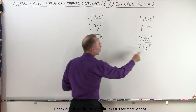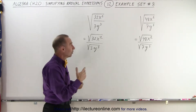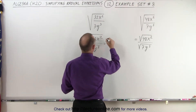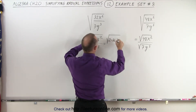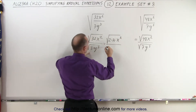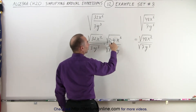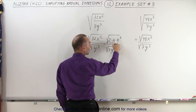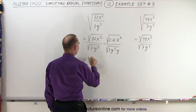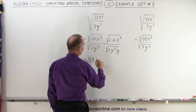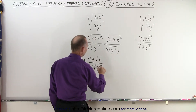Likewise, here we have y cubed in both. So what we can do is get rid of at least a y squared. This can be written as the square root of 2 times 16 times x squared, divided by the square root of 3y squared times y. We know that the square root of 16 is 4, the square root of x squared is x, and the square root of y squared is y. So this can now be written as 4x, and what we have left is the square root of 2, divided by y times the square root of 3y.